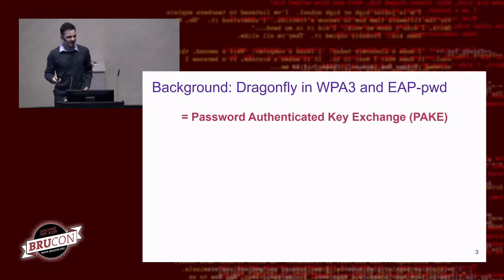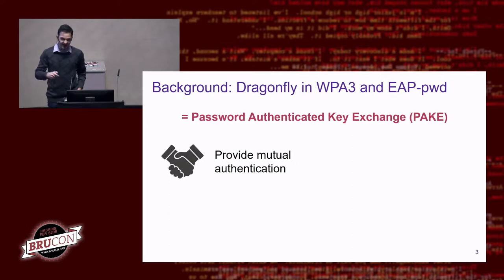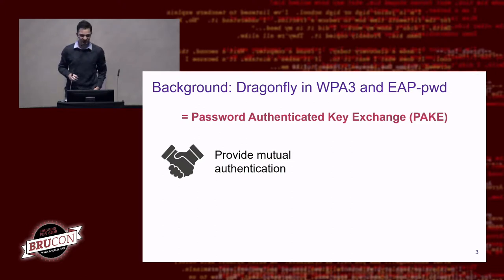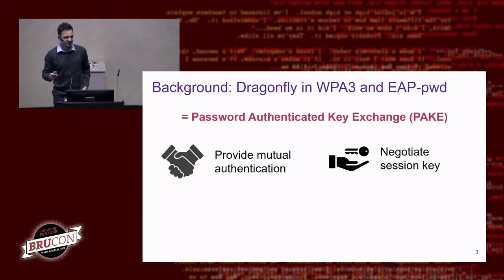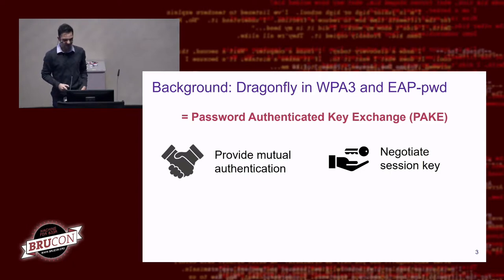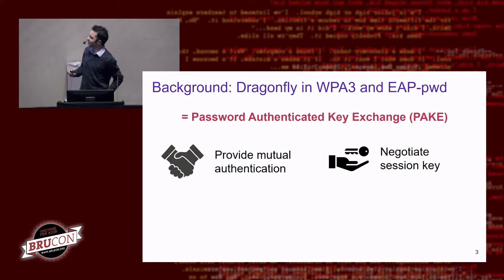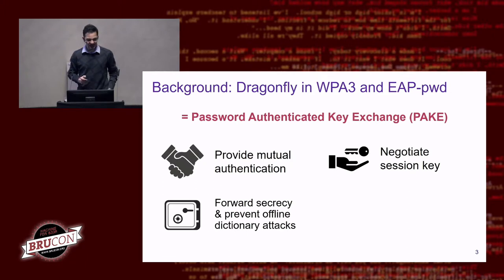A PAKE handshake provides mutual authentication: the client proves it knows the password, and the access point also proves it knows the password. This means you're sure you're not connecting to a rogue network. At the same time, the handshake also negotiates a fresh session key, used after the handshake to secure normal data traffic. Most importantly, the Dragonfly handshake prevents offline dictionary attacks and provides forward secrecy.